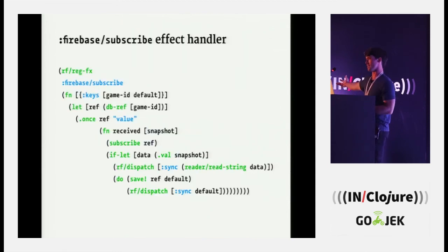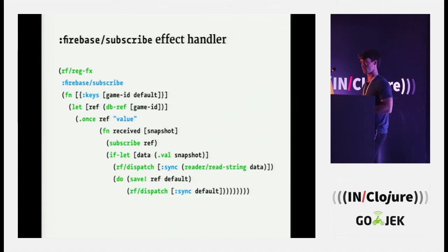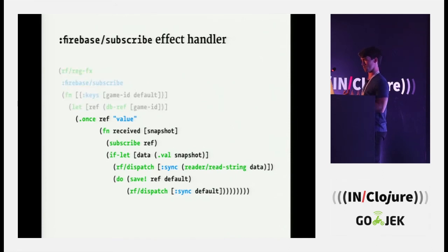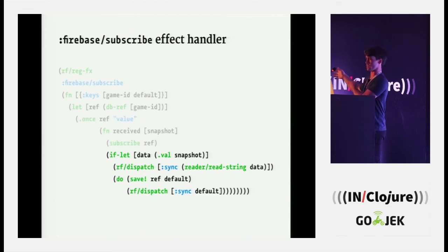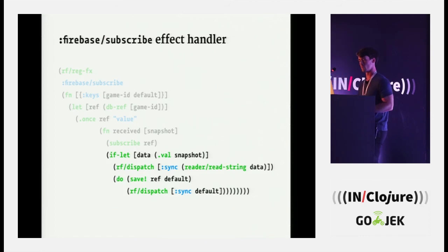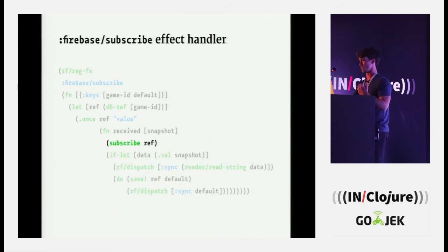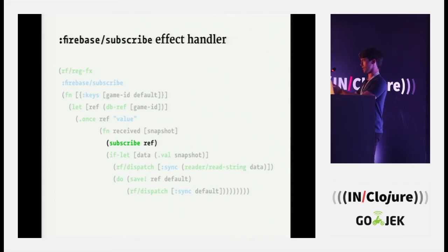The Firebase subscribe effect handler is more complicated than the DB one — there's more code and more interaction with Firebase. It's grabbing the DB reference, using the API to get the current value at that path. If the value's there, dispatch an event. If it's not there, save some default stuff there to initialize the shared state, then subscribe to get all updates to that path. As you build your views, you also realize what data you need — that's when you write your subscriptions. You need to subscribe to something, you need this here, so write the subscription that enables that.